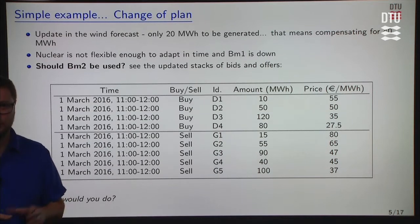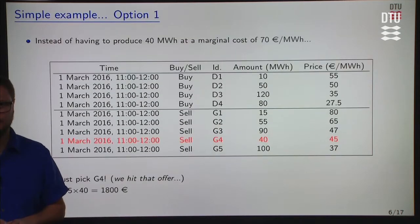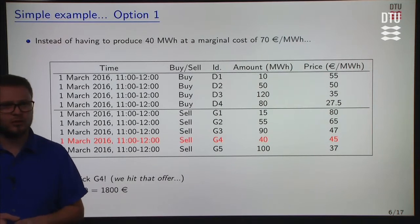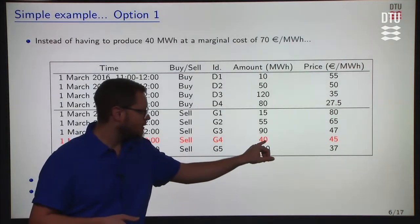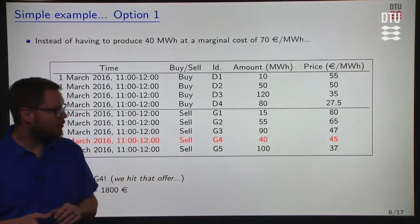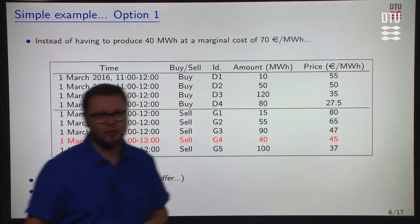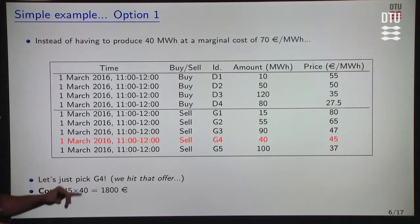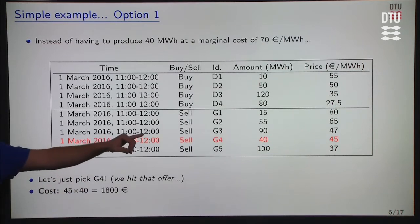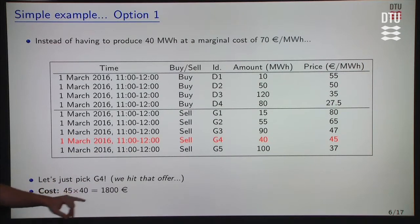Should we use BM2 or some of these offers from the intraday market? Instead of producing 40 megawatt hours at the marginal cost of 70 euro per megawatt hour, what we could do is get this 40 megawatt hours through the offer of G4. The price to pay is 45 euro per megawatt hour, which is less than the 70 euro per megawatt hour it would cost to produce it ourselves with BM2. So we hit that offer and the cost is 45 times 40, which equals 1,800 euro.